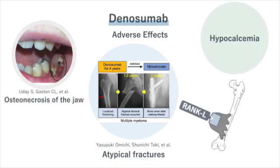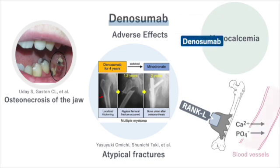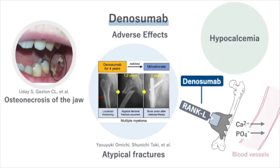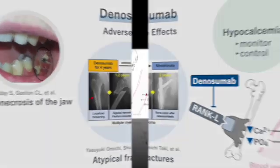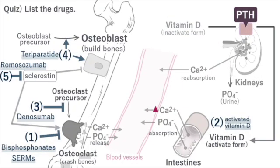Since the mechanism of action of denosumab is to inhibit bone resorption by osteoclasts, there are documented cases of severe, and even fatal, denosumab-induced hypocalcemia. Clinicians should closely monitor and control calcium levels.